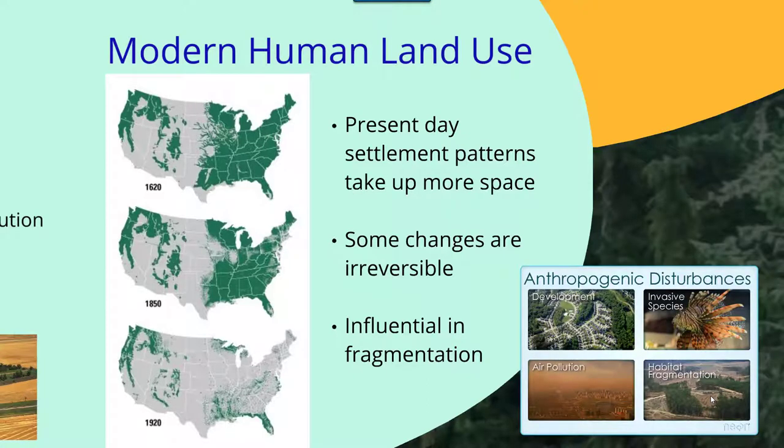Several different mechanisms of anthropogenic disturbances include development, air pollution, invasive species, and habitat fragmentation.